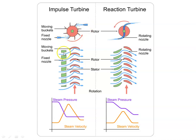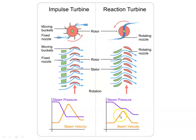Here we have a nozzle — the green color is the nozzle. It is a fixed nozzle attached to the casing of the machine, and you have the moving blade. The purpose of the moving blade is to convert the velocity of the steam into work done. The steam pressure decreases across the nozzle and the pressure remains constant in the moving blade. The velocity is increasing in the nozzle — the drop in pressure is converted into increasing velocity, and that velocity is utilized in the moving blade to produce power.